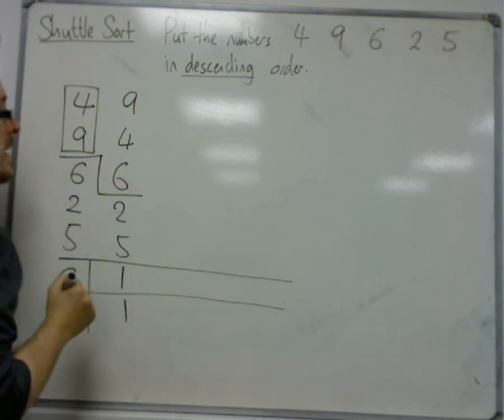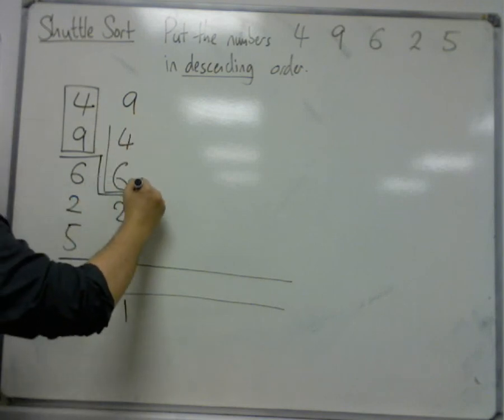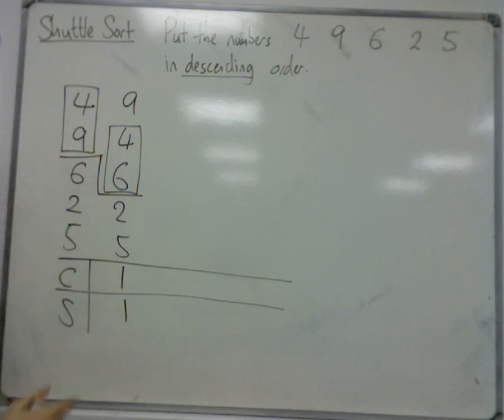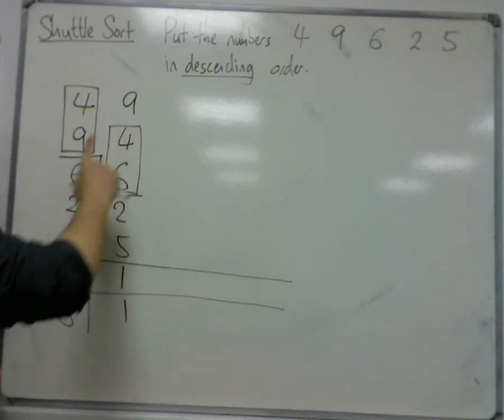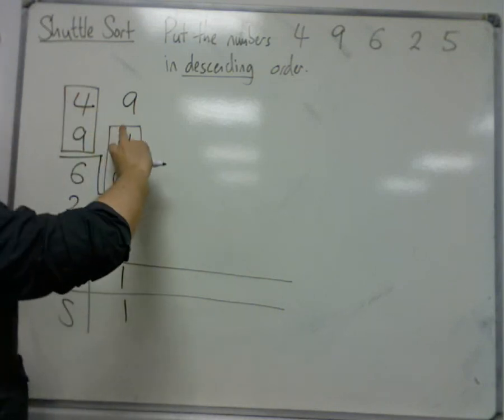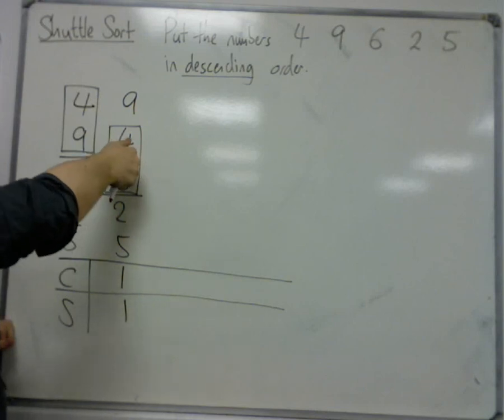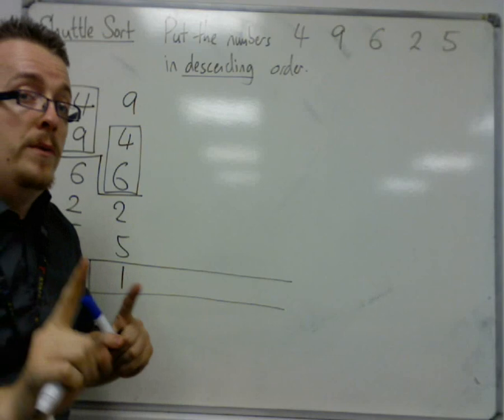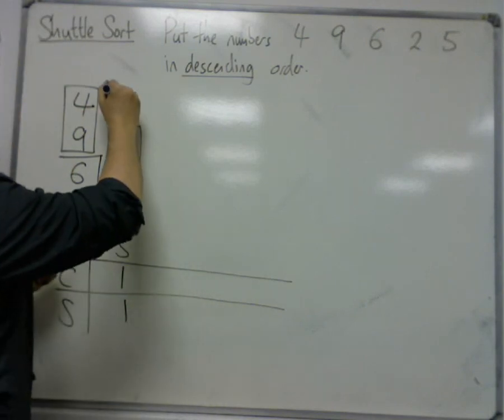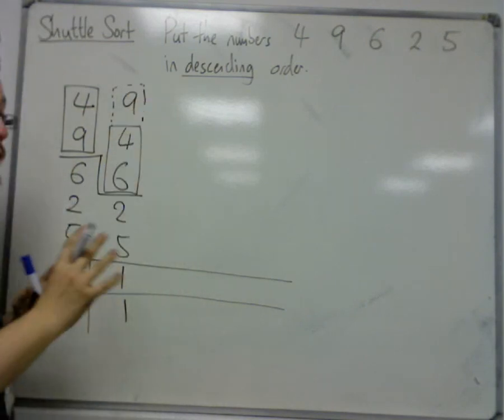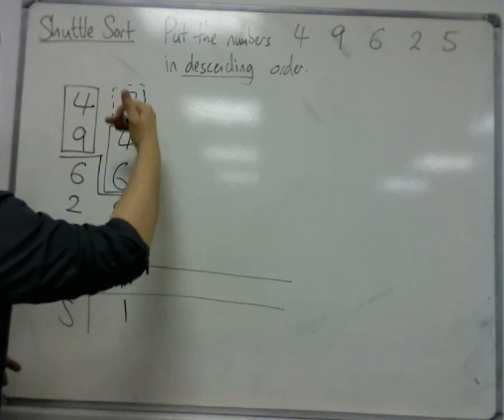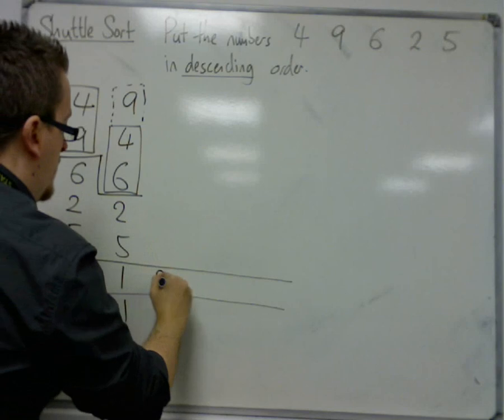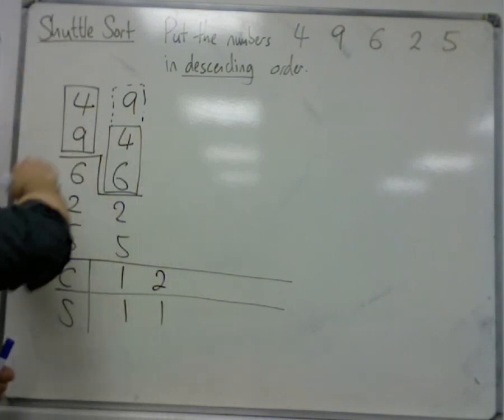I drop down a level and compare the 4 and the 6. The 4 and 6 would be in correct order if this was ascending, but it's descending. So I need to swap the 6 and the 4. But to make sure the 6 is now in the correct place, I must also compare it with the 9, which obviously is correct. So I've made two comparisons but only one swap there, the 6 and the 4.